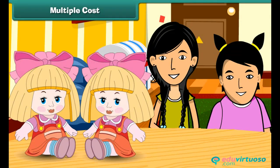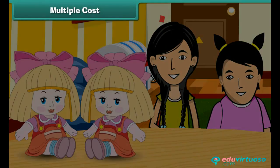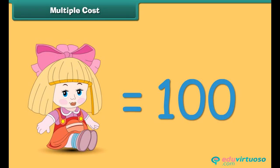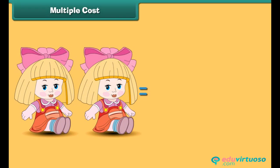Let us hear what these girls are talking about. My mother bought two dolls — one for me and one for my younger sister. The unit cost of a doll is 100 rupees. Do you understand the term unit cost? Unit cost is the cost of a single unit. So the cost of a single doll is rupees 100.